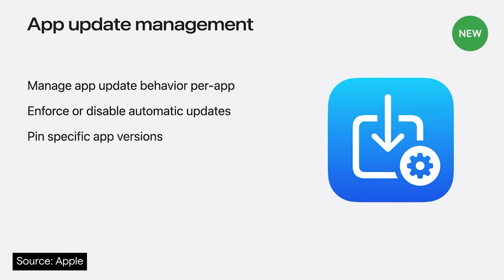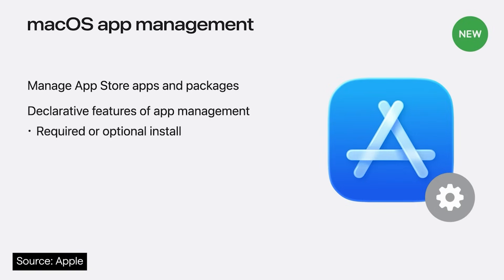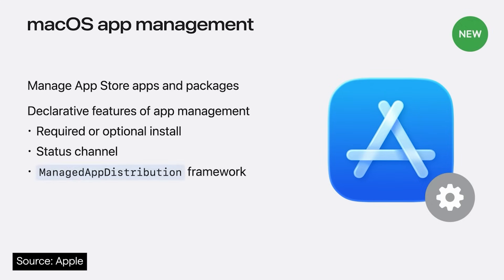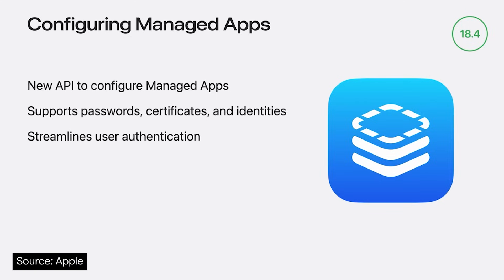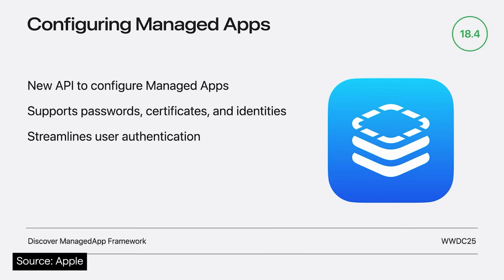Onto some pretty significant changes in app management — it's going declarative too. Install or pin apps to specific versions, configure auto updates, and restrict downloads on cellular. Education customers in particular might want to think about how version pinning can prevent unexpected updates for a smoother classroom experience. For Mac, declarative app management brings the ability to install App Store, custom apps and package files, supporting optional and required deployments. In mobile, we'll get managed app configurations — deploy passwords, certificates and tokens securely, and confirm user role with support for device attestation and hardware-bound identities.